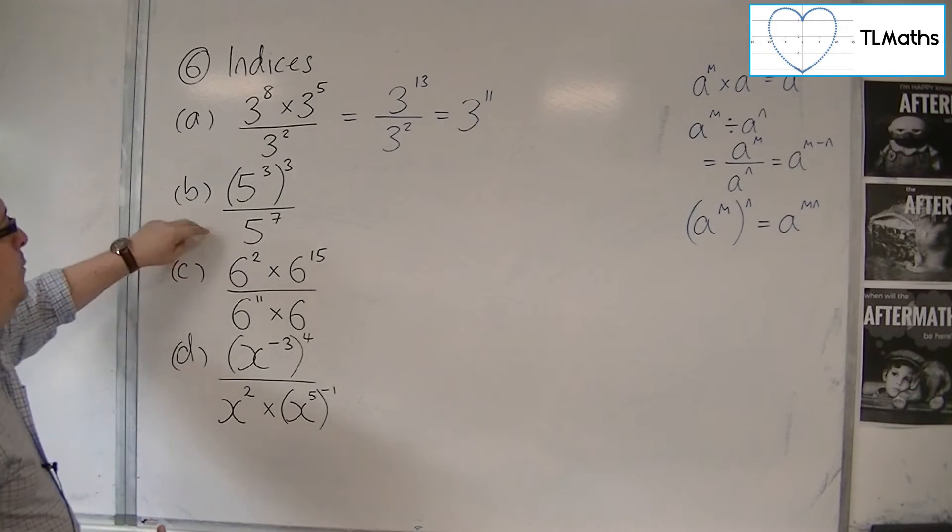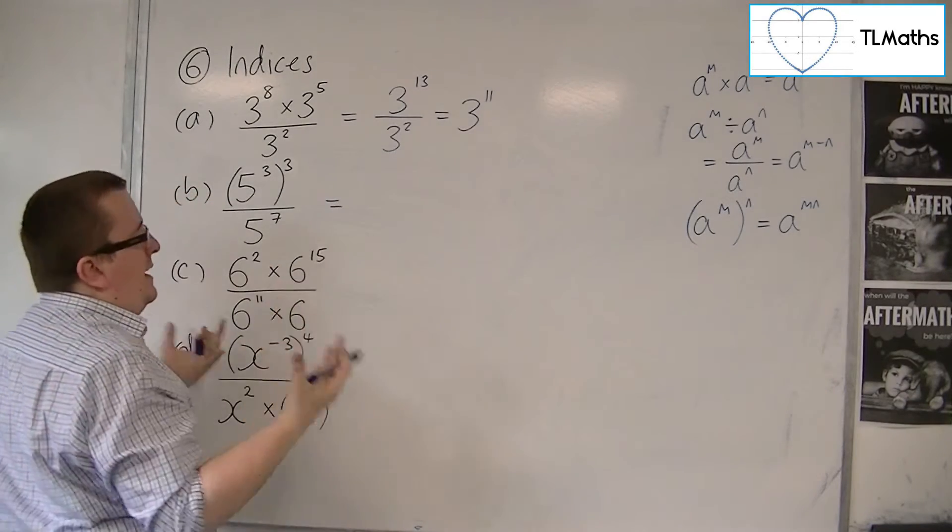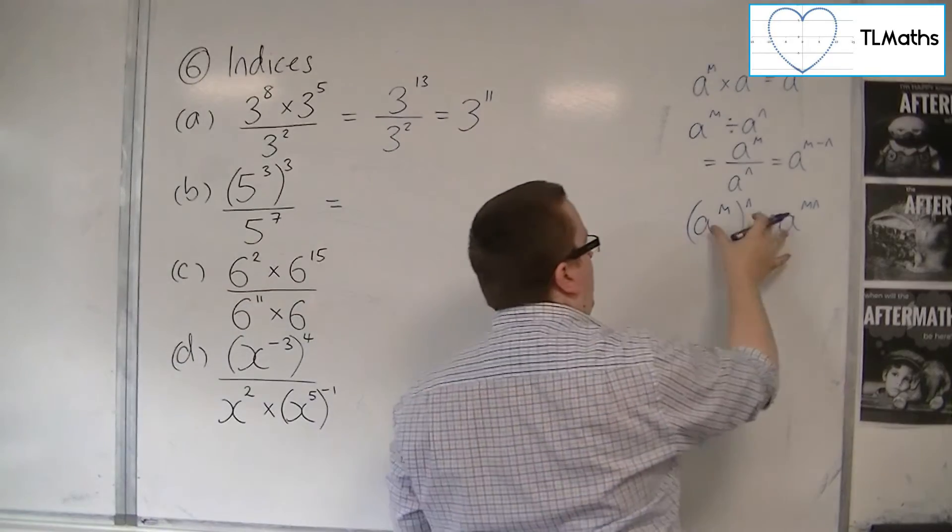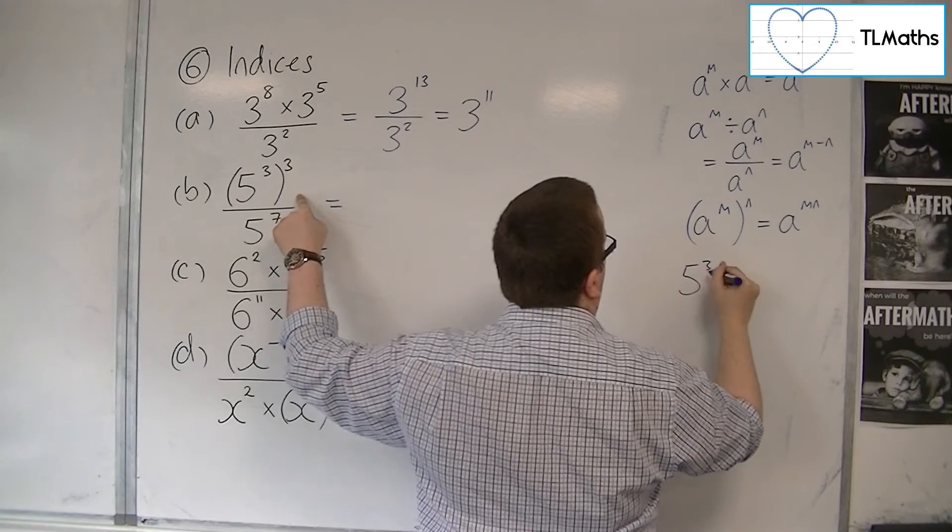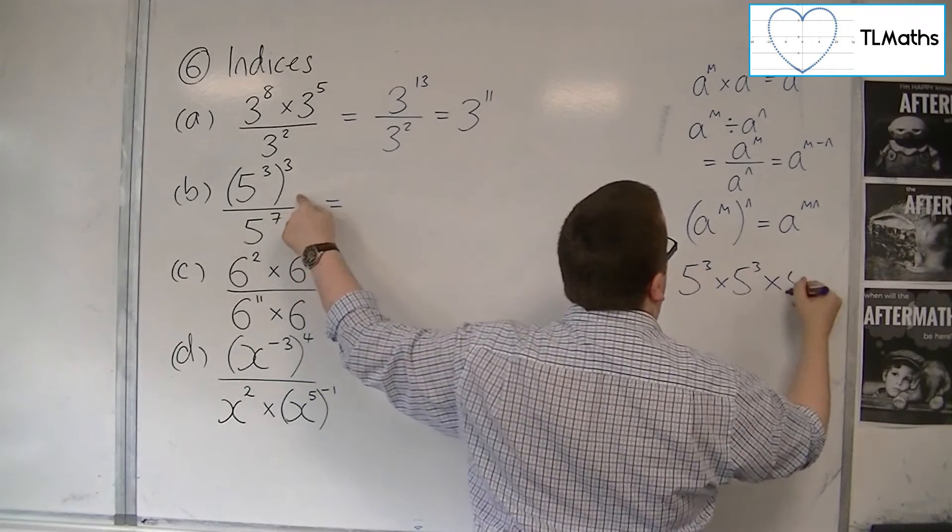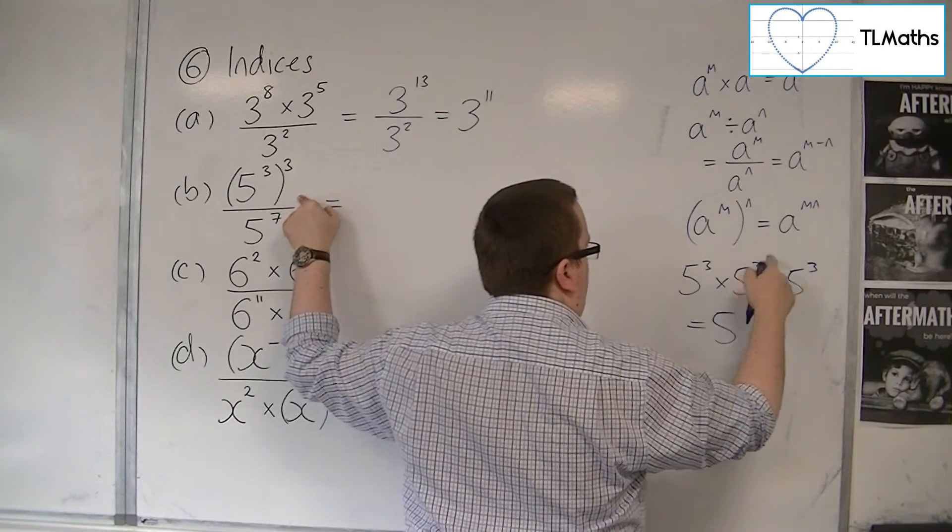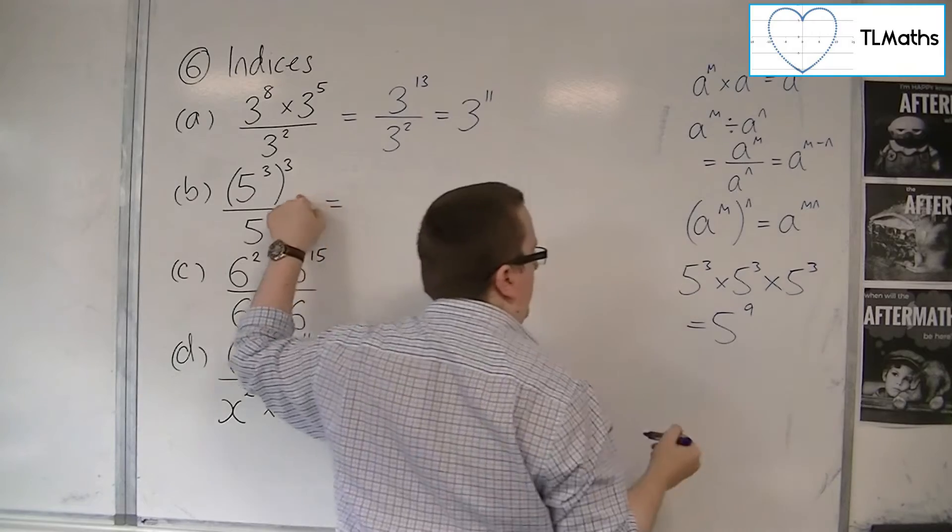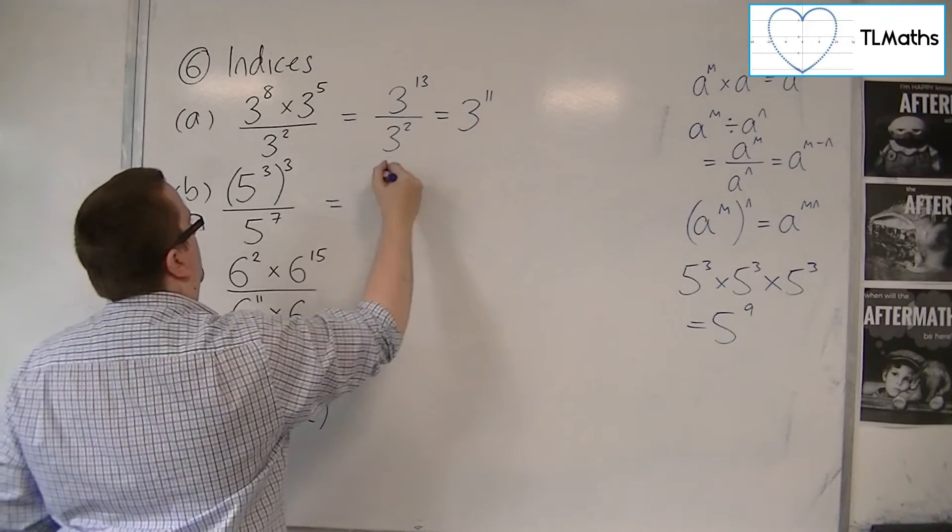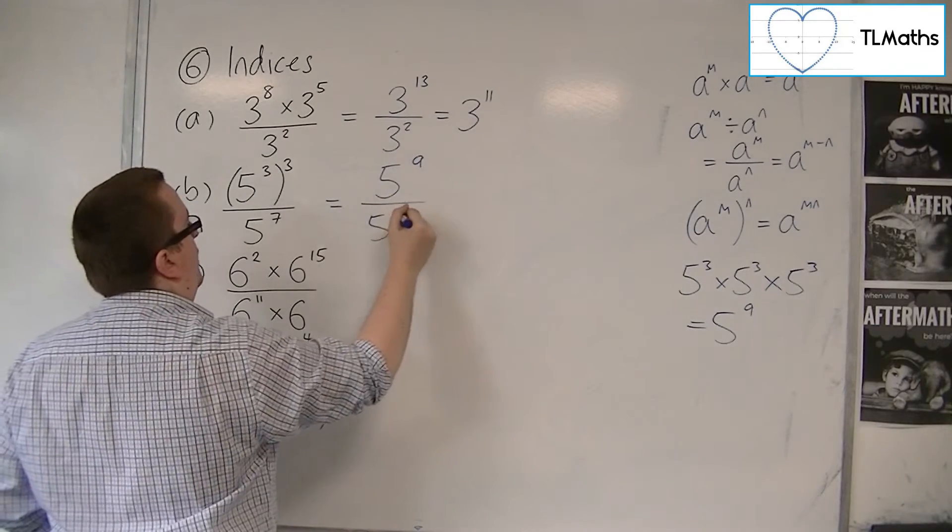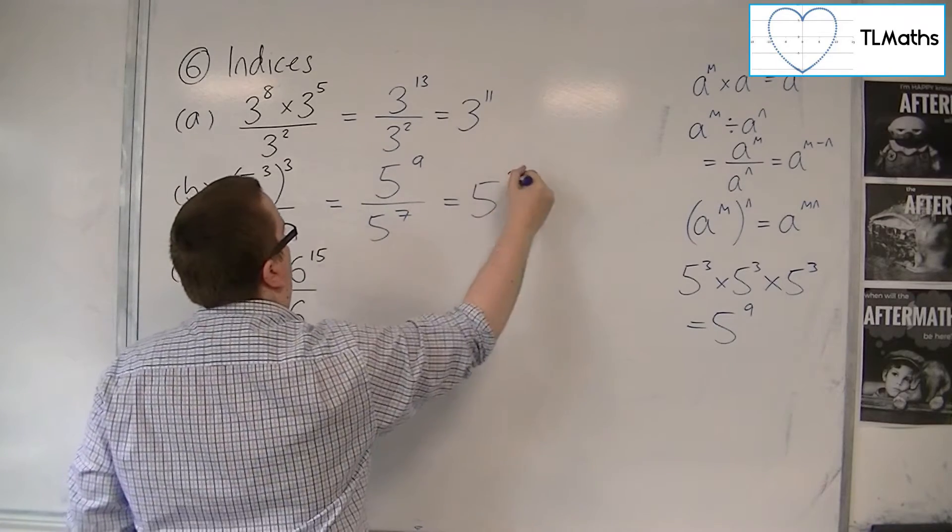For part B, we have (5^3)^3. To make it clear why this works: (5^3)^3 means 5^3 × 5^3 × 5^3, which gives us 5^(3+3+3) = 5^9. This is exactly the same as 3 × 3. So we have 5^9 ÷ 5^7, which equals 5^(9-7) = 5^2.